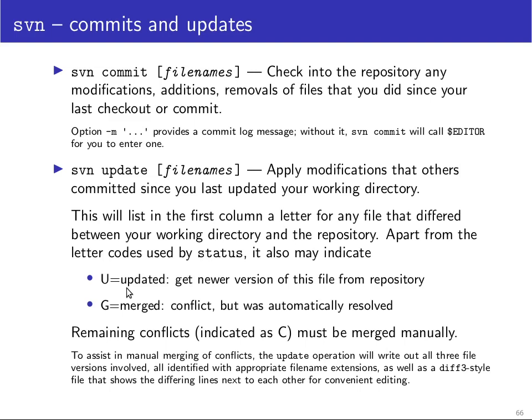On the other hand, if you already have some local modifications in your working directory and Subversion was successful in automatically merging changes that someone else has made into your locally modified file, then this will be indicated by listing the file name preceded with the letter G, which stands for merged. So there was a version conflict but it was automatically resolved because the lines that have been edited are sufficiently far apart. But if the same lines or neighboring lines have been edited, that will result in a conflict, which is then indicated as a C.